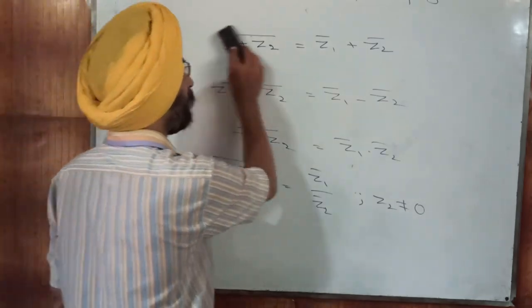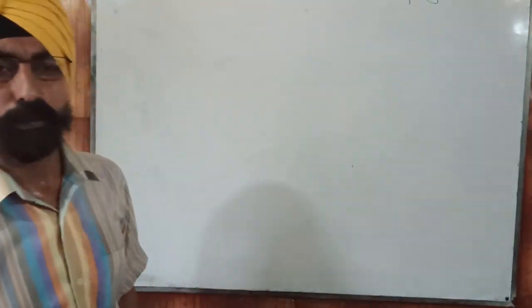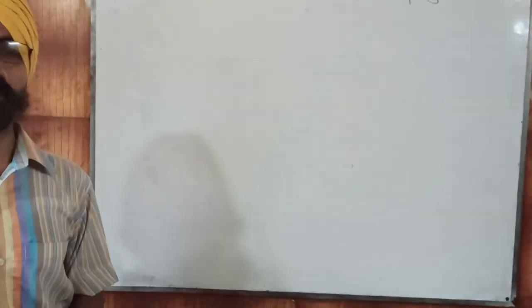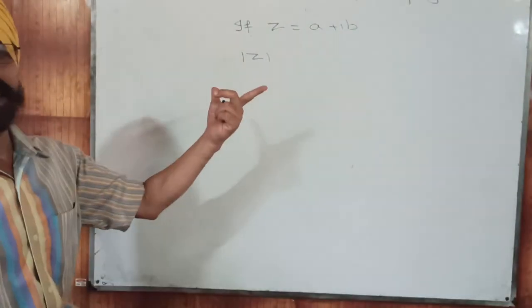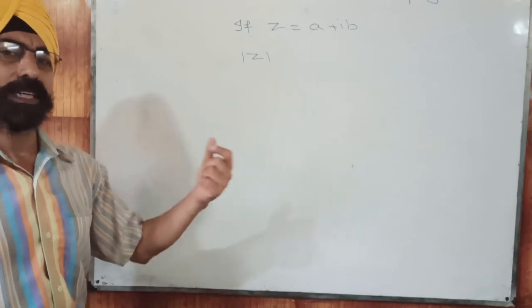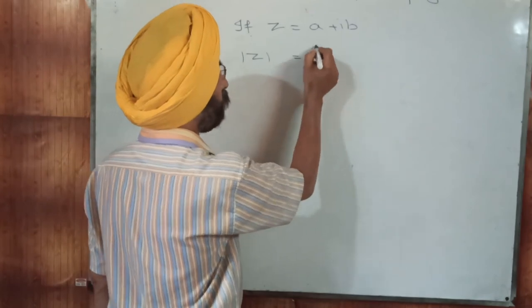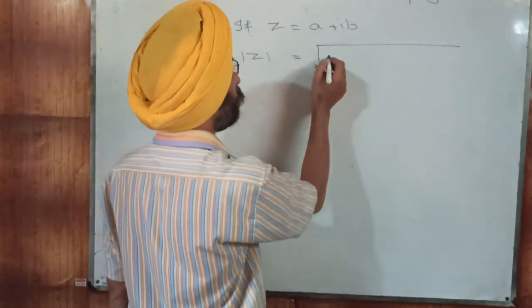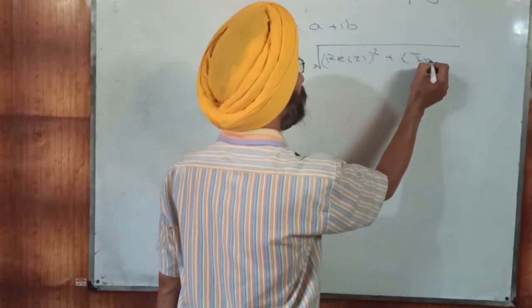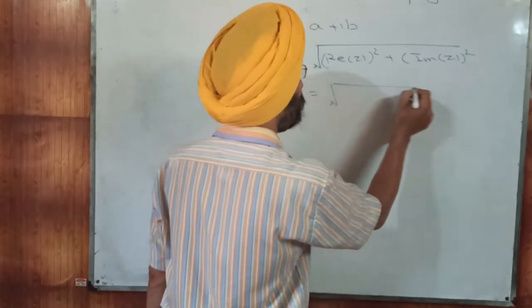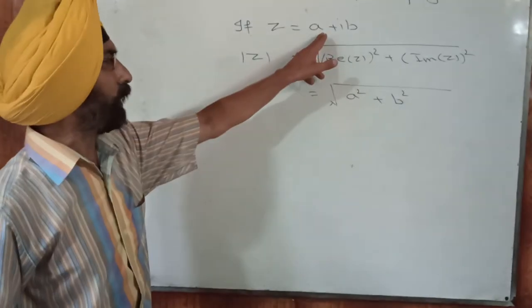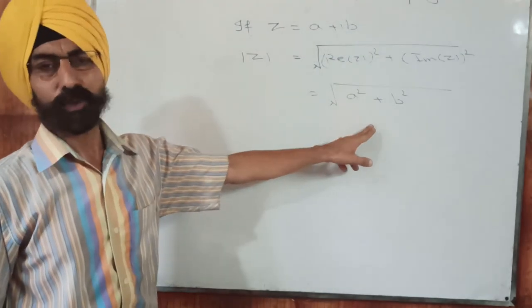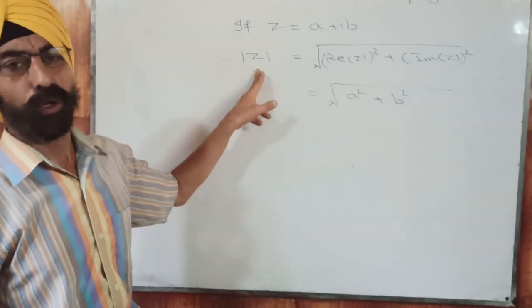Before going to more properties I must tell you what is the modulus of a complex number. If Z is A plus iota B, then the modulus of Z — mod Z — is the square root of the sum of squares of the real and imaginary parts. So mod Z equals square root of A squared plus B squared. It is also called the absolute value of Z.